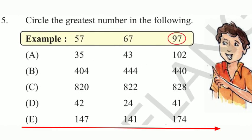Next, E. In this, 147, 141, 174. Which is the greatest number in this 3? Yes. Very good.